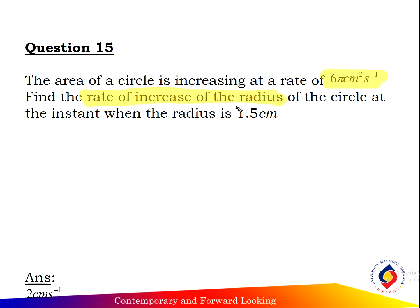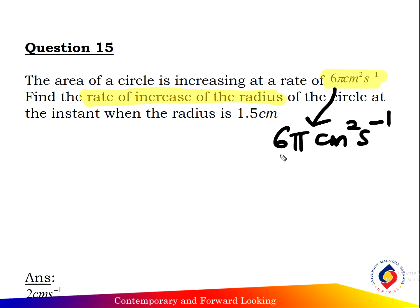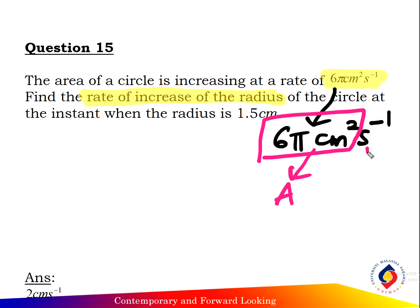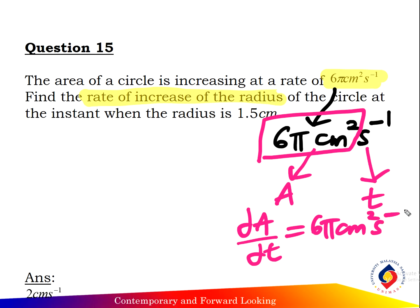First, the area of the circle increases at the rate of 65 centimeters square per second. So here is the rate of area with respect to time — dA over dt equals 65 centimeters square per second.